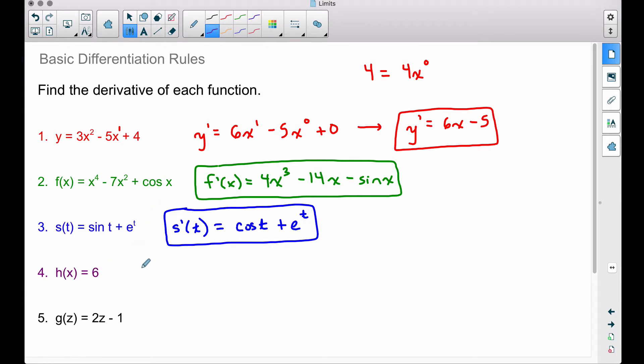Number four, don't want you to forget this one. h prime of x, well, h of x is a constant. The derivative of a constant earlier was zero, right? So the derivative of six is zero.